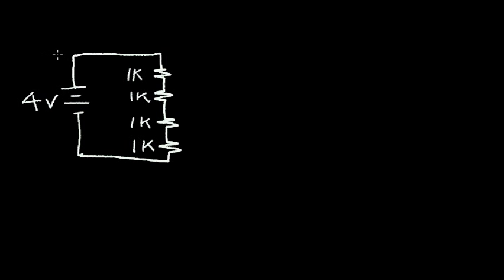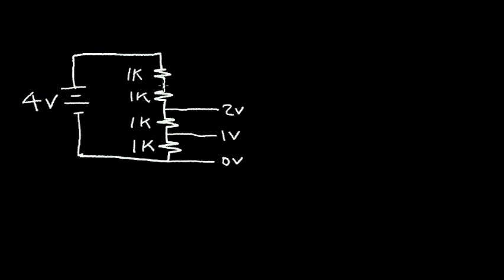Let's consider another voltage divider circuit with four volts and four equal resistors, each 1kΩ. The voltage at the bottom is zero volts. The four resistors in series give a total equivalent resistance of 4kΩ, and four volts divided by 4kΩ is one milliamp flowing through each resistor. Each resistor drops one volt, so the voltage taps are: one volt, two volts, and three volts at each successive node.